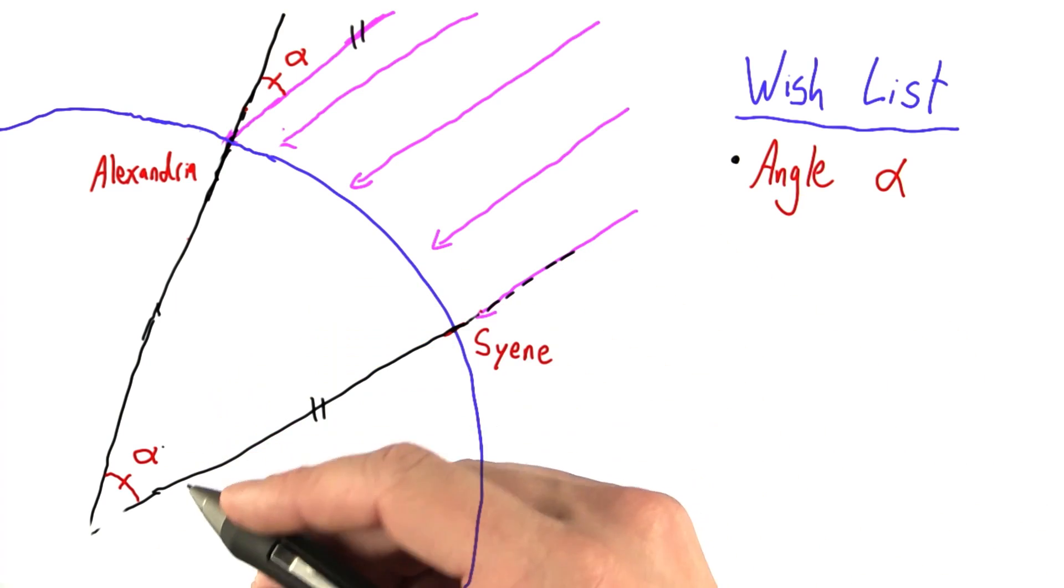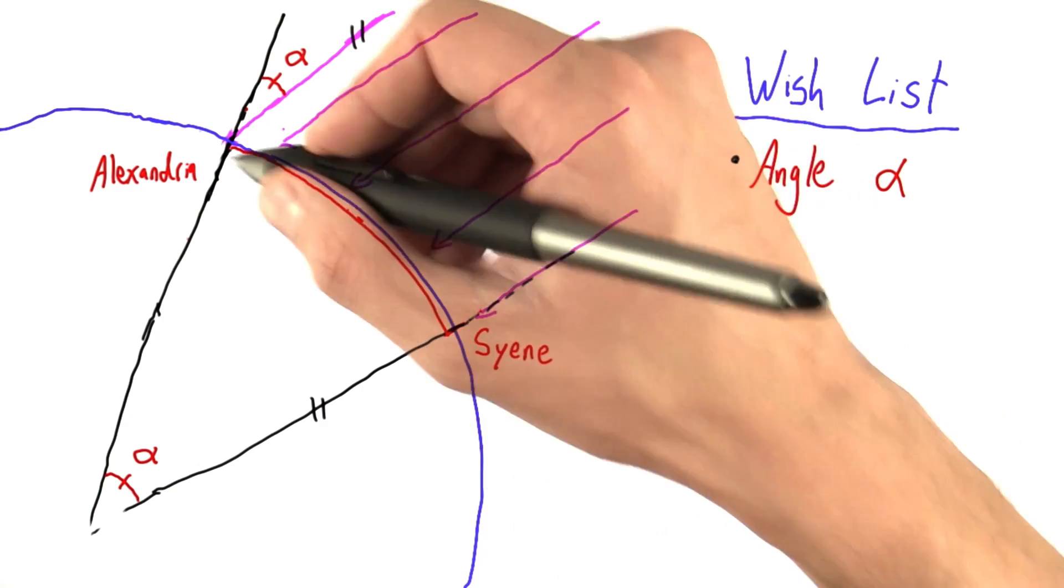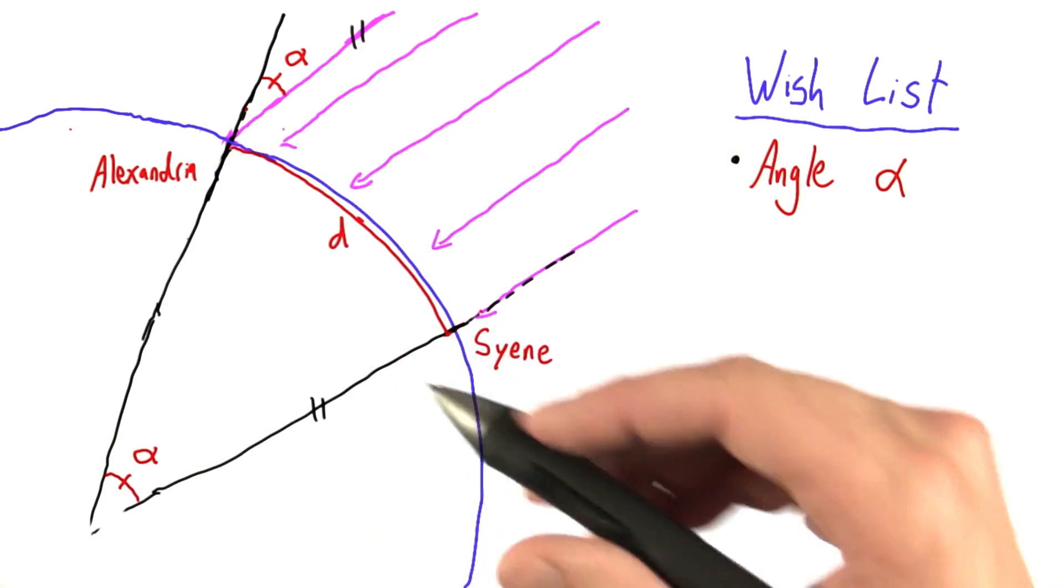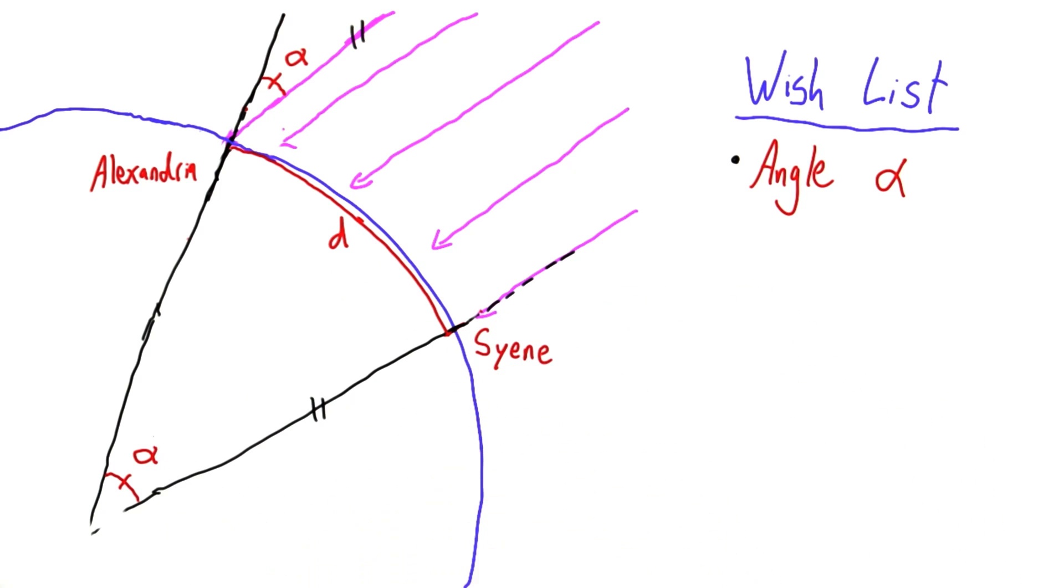Maybe a half, maybe a quarter, we don't know yet. What we do know is that the ratio of this length, I'm going to call this length d, to the full circumference of the Earth must be equal to the ratio of this angle over 360 degrees.